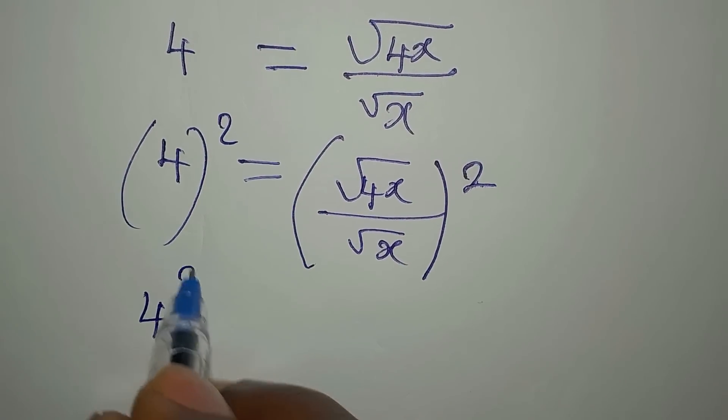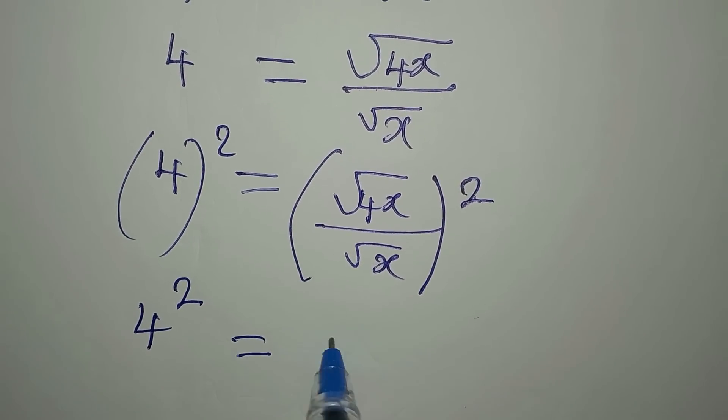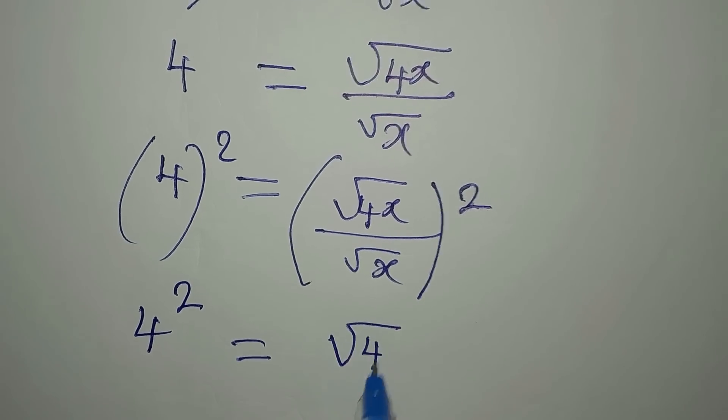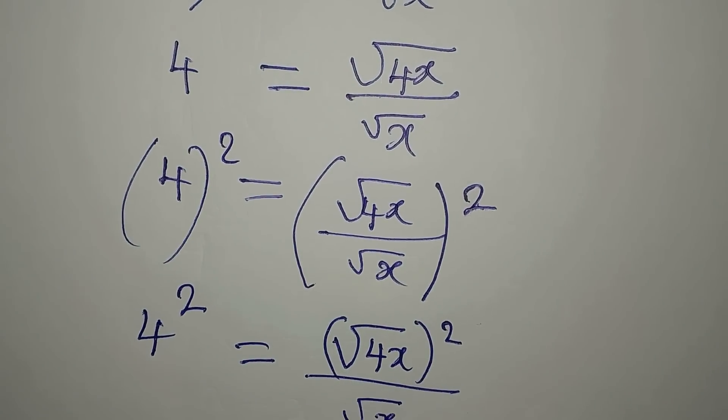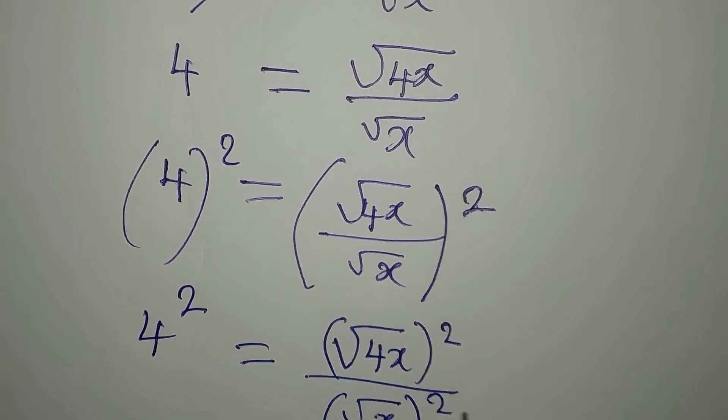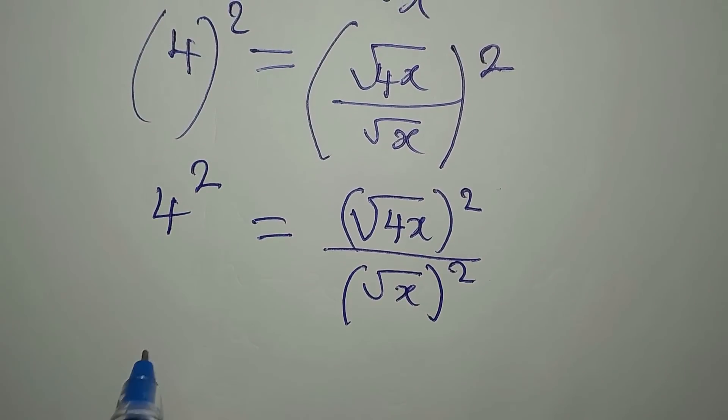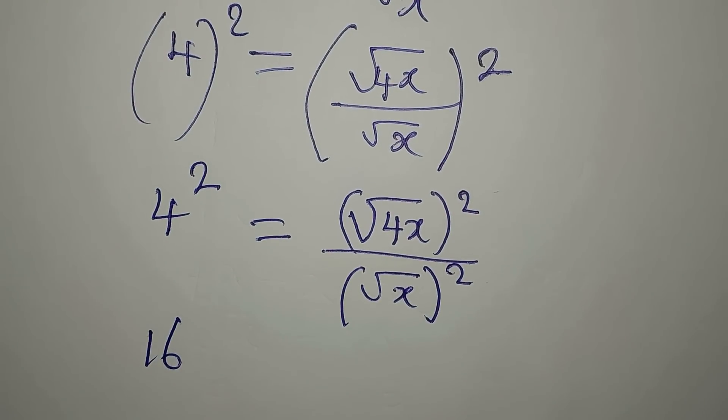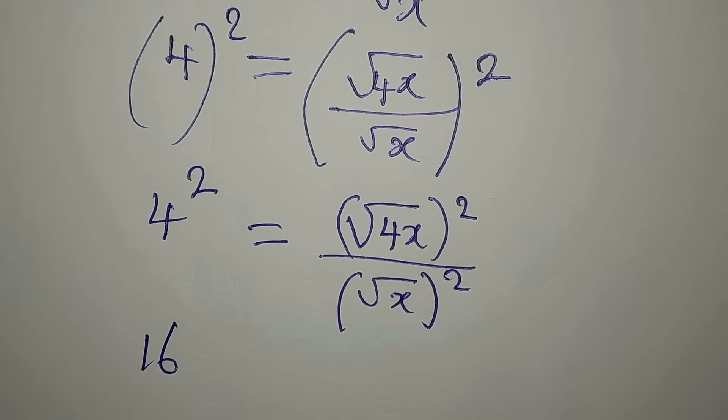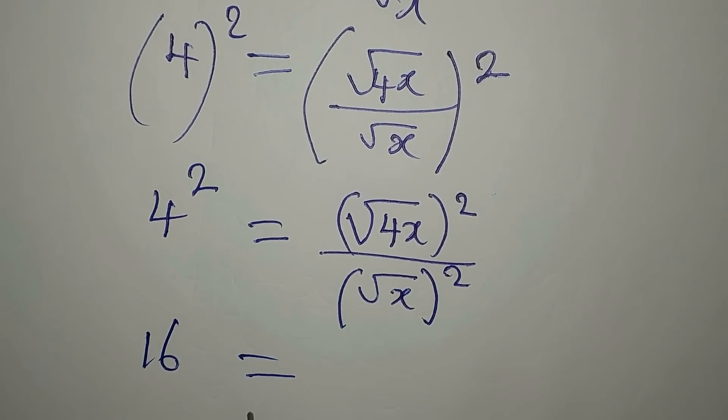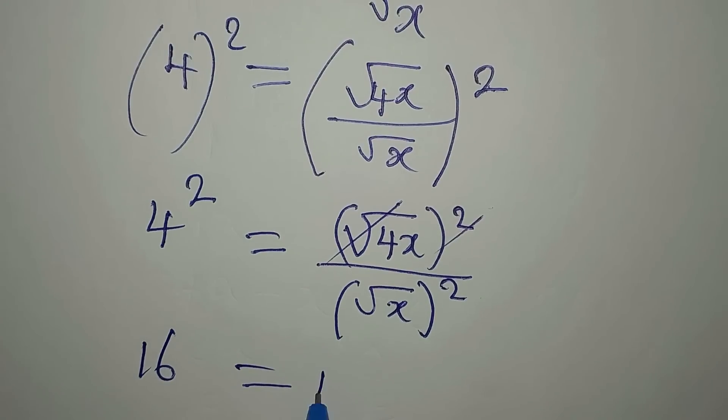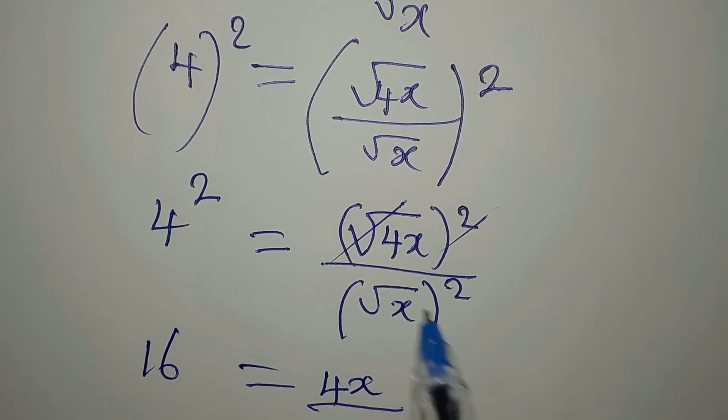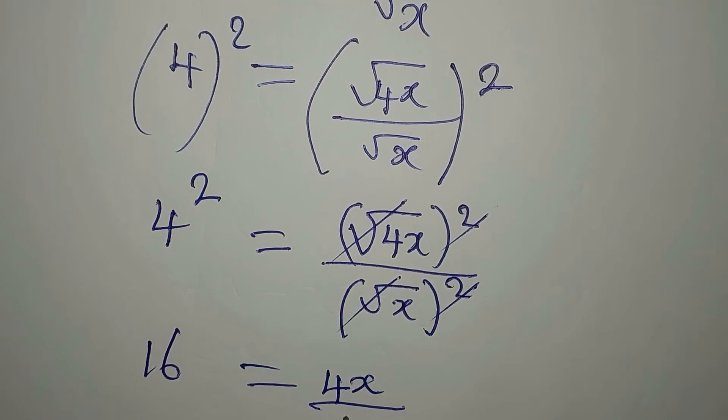4 squared is equal to square root of 4x squared over square root of x, then this will be squared as well. So here we have 16. And it is now equal to, from here, this will go with this. We now have 4x over, this will go with this, we now have x.